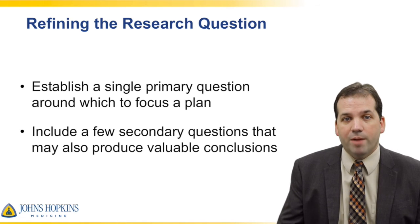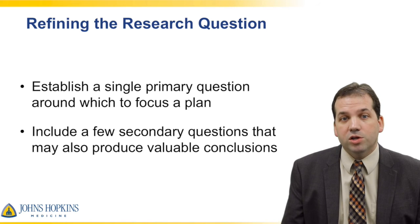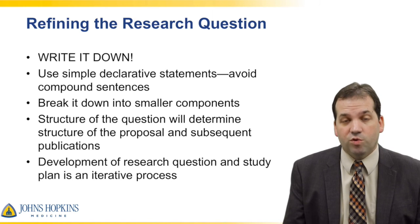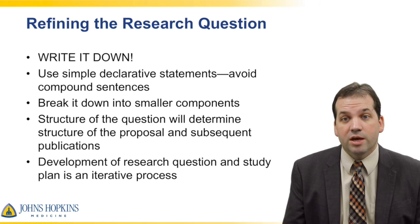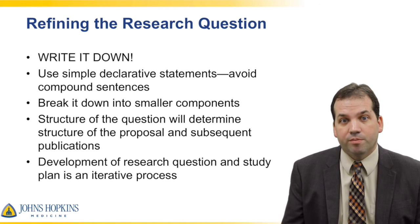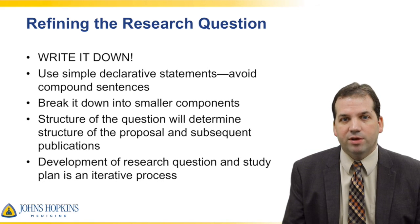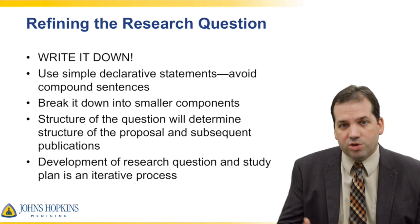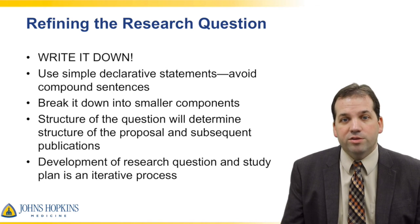When refining a research question, you want to establish a single primary question around which to focus the plan, but also include a few secondary questions — things you're also interested in that may produce valuable conclusions. I encourage you to write it down, using simple declarative statements. Avoid compound sentences; a confused research question might make a confused study. Break the question down into smaller parts — a primary question, then a secondary question. The structure of the question will determine the structure of the proposal and any subsequent publications. This development is really an iterative process: you develop your research question, develop your study plan, talk with your mentor, and do that over and over again — it's not a one-and-done process.